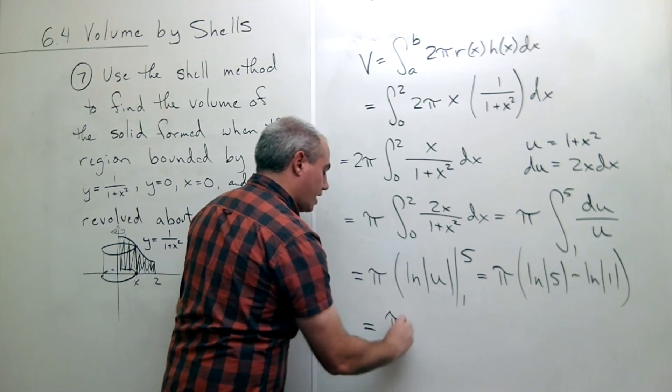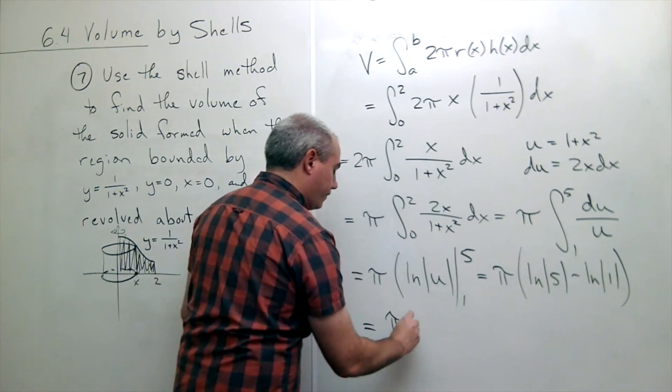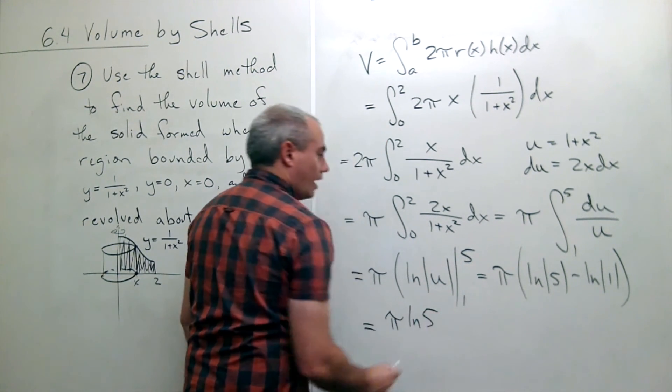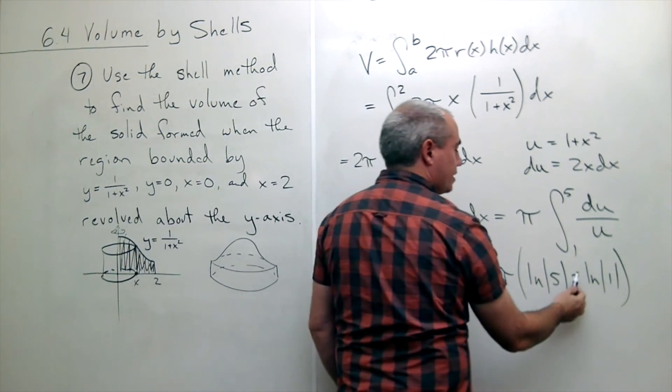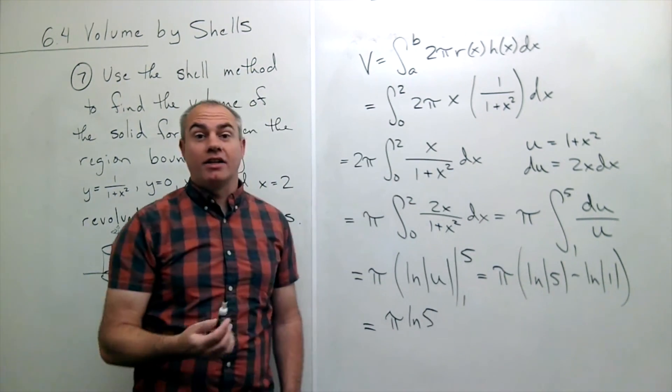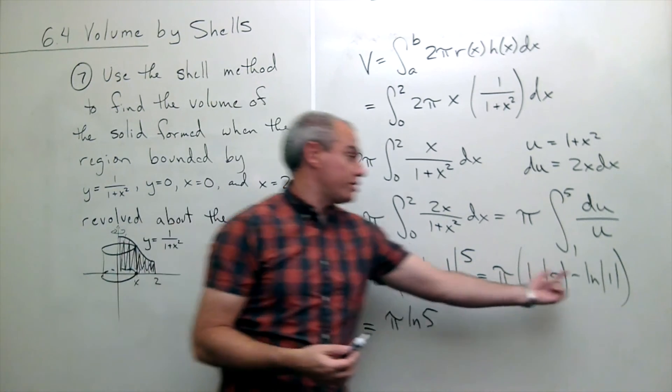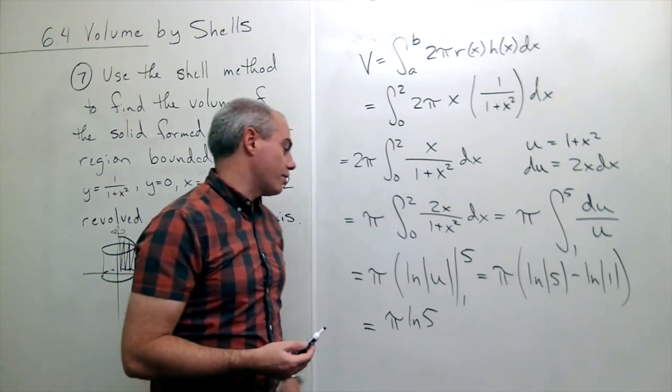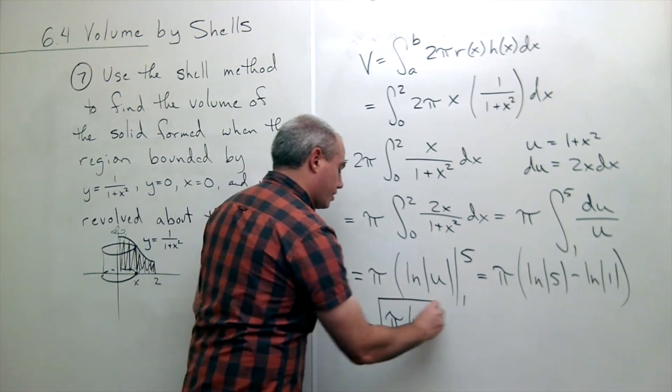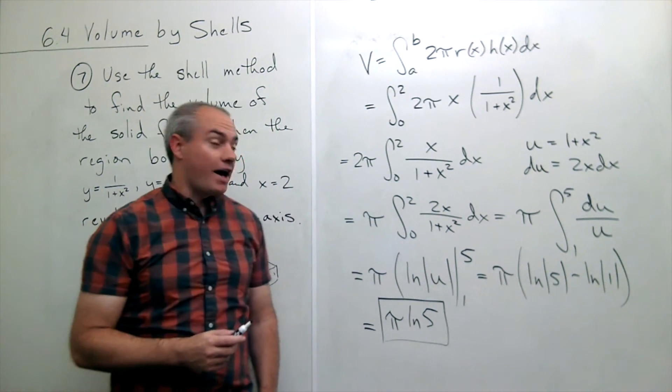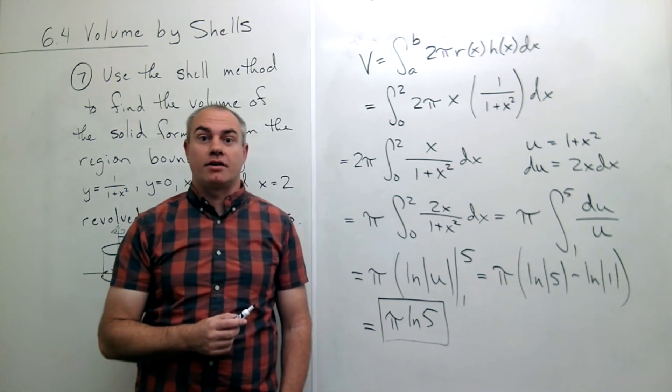So I get pi times ln of 5. And then I get pi times negative ln of 1. But ln of 1 is 0. So this is just 0. Pi times 0 is 0. And I have my answer which is pi times the natural log of 5.